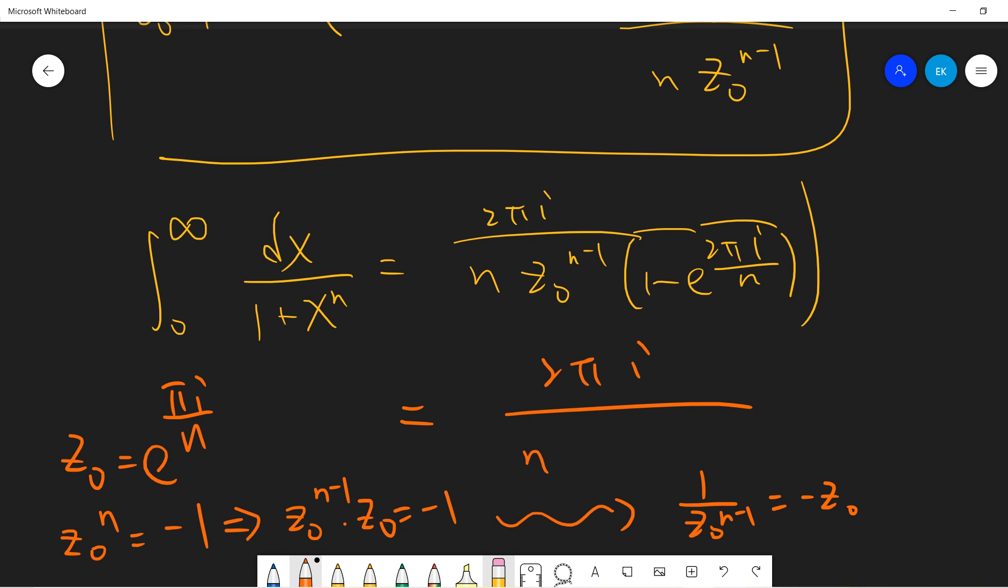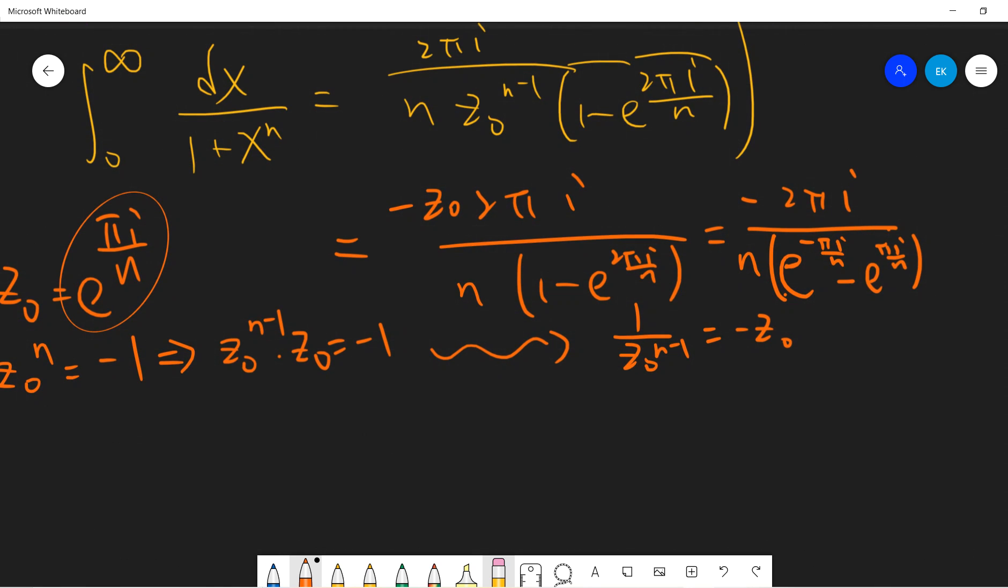So 1 over z0 to the n-1 will be minus z0. So 1 minus z0 to the n-1 will be minus z0. So it's minus z0, which is minus exponential 2 pi i divided by n. And what is z0? It's minus 1. So let's become 2 pi i over n times minus, and z0 divided. So it becomes minus exponential negative pi i divided by n minus exponential pi i divided by n.